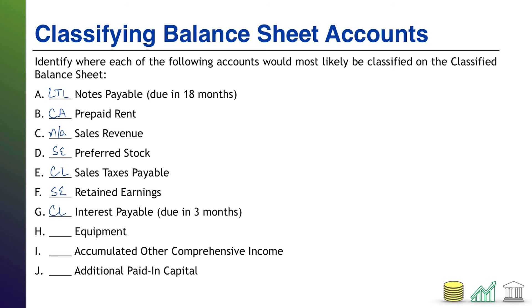Next up: equipment. Something that you own. These big, large, tangible purchases actually have their own special category called property, plant, and equipment — PP&E.